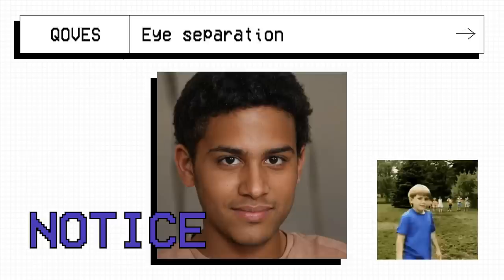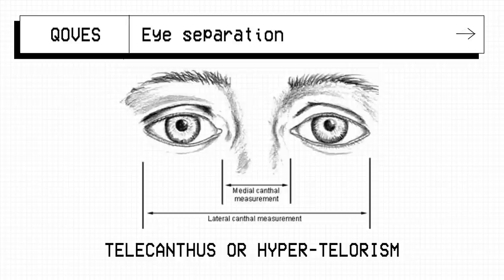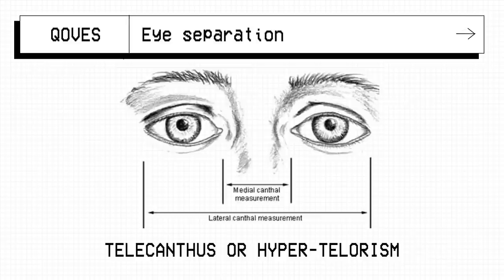This isn't as unusual as you may think either. Telecanthus or hypertelorism is the medical term for increased distance between two points and is often common in patients suffering from cleft malformations or congenital defects like fetal alcohol syndrome.